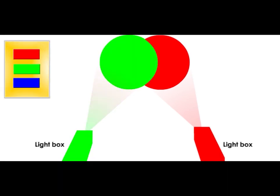What is the colour formed when green light is mixed with red light? The answer is yellow.